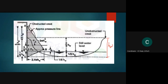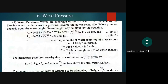The wave pressure forms a curvilinear distribution, but for ease of calculation it is considered triangular. The pressure intensity due to wave action is PW = 2.4 × γW × HW, acting at HW/2 above the still water surface.